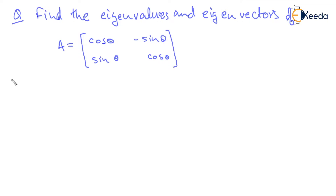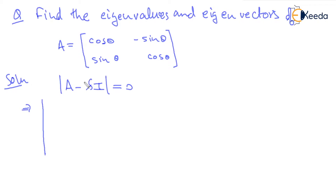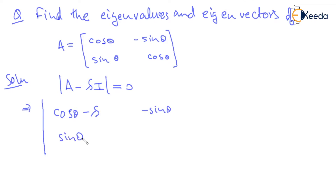Let's see the characteristic equation first. This is A minus lambda times I, determinant equal to 0. Because I is the identity matrix which will have only entries at the diagonal elements. So, cos theta minus lambda replaces the diagonal: cos theta minus lambda, minus sin theta, sin theta, cos theta minus lambda, equal to 0.